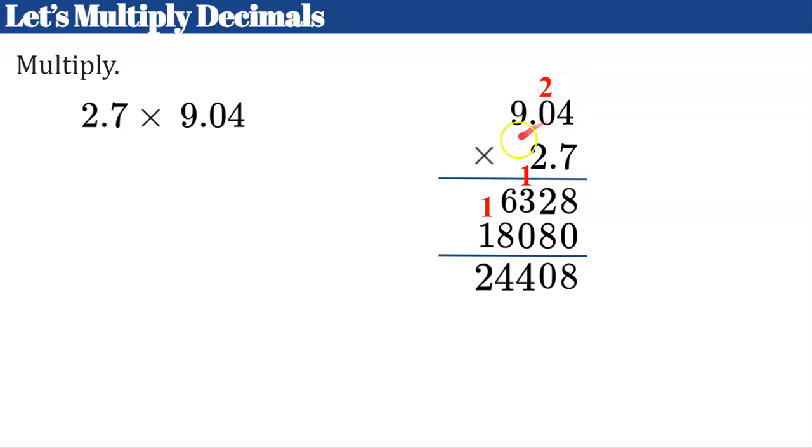Now this is my product, but I need to place my decimal point. 9.04 and 2.7 are our factors. When you are multiplying, the numbers you're multiplying are called factors, and the answer is called your product. I count my decimal points in the first factor, which is 2, and my decimal places in the second factor, which is 1. So I have a total of 1, 2, 3 digits after the decimals. That means I need to come over here and place my decimal point 3 digits from the right. So my decimal point goes there, and now my product is 24.408.